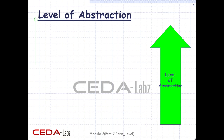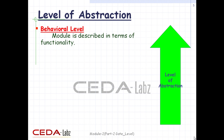Internals of each module can be defined at four levels of abstraction, depending on the needs of the design. The first is the behavioral or algorithmic level — this is the highest level of abstraction provided by Verilog HDL. A module can be implemented in terms of the desired design algorithm without concerning for hardware implementation details. Designing at this level is very similar to C programming.